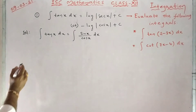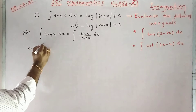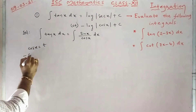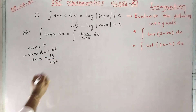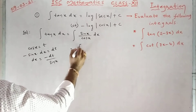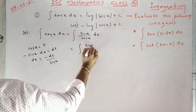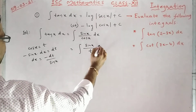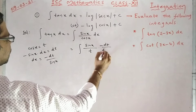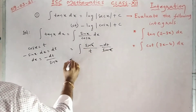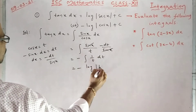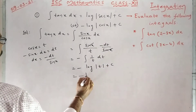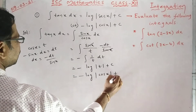Now let me take cos x equal to t. Write the derivative: minus sin x dx equals dt. So dx equals minus dt by sin x. If we substitute here: sin x upon t, dx means minus dt by sin x. This sin x gets cancelled, giving minus integral 1 by t dt. So minus log mod t plus c, which is minus log mod cos x plus c.